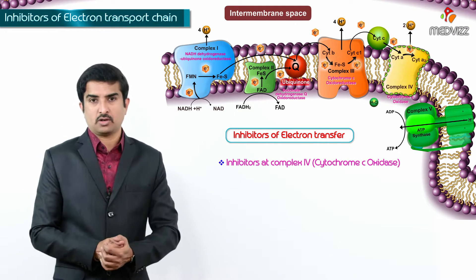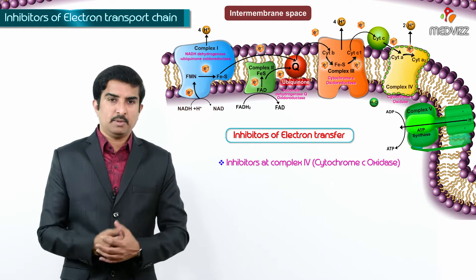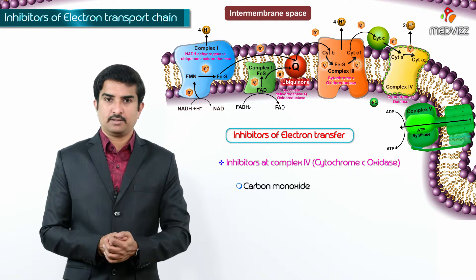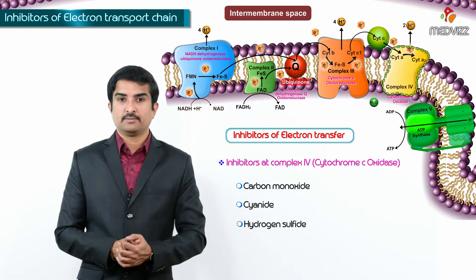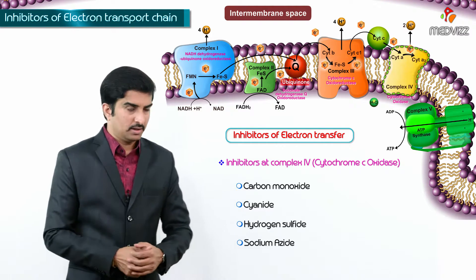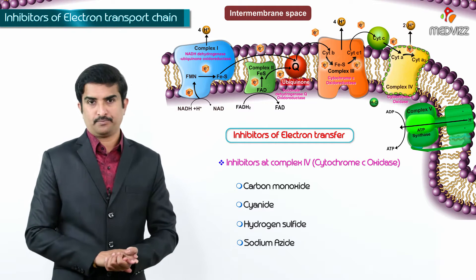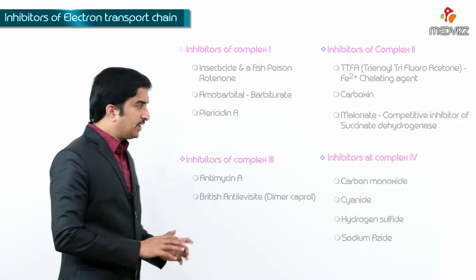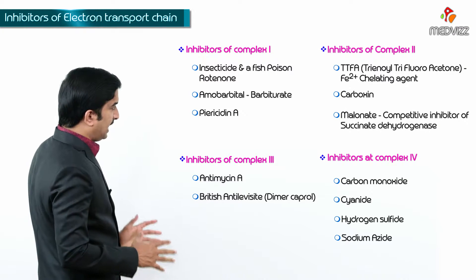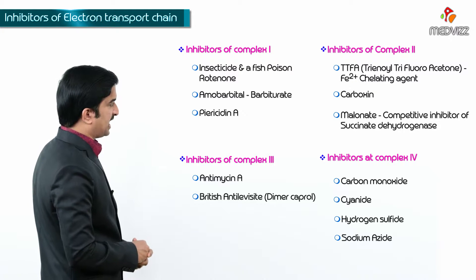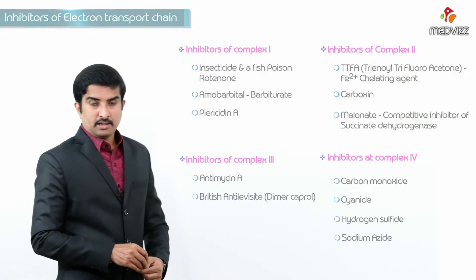The inhibitors of Complex IV, also called cytochrome C oxidase, are carbon monoxide, cyanide, hydrogen sulfide, and sodium azide. All four are specific inhibitors of Complex IV. Together, from Complex I to Complex IV, these are the specific inhibitors of the electron transport chain.